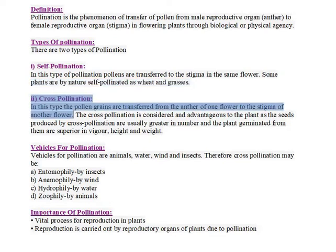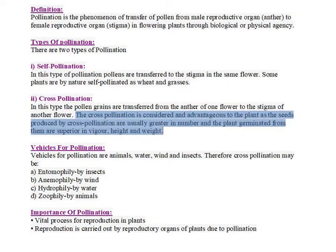2. Cross-pollination: in this type, the pollen grains are transferred from the anther of one flower to the stigma of another flower. Cross-pollination is considered advantageous to the plant as the seeds produced are usually greater in number, and the plants germinated from them are superior in vigor, height, and weight.